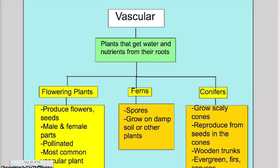We emphasized the difference between vascular and non-vascular plants again through a flow chart, looking at flowering plants, ferns, and conifers, and associating them with different characteristics and definitions, so students could see how it flowed from one thing to the next.